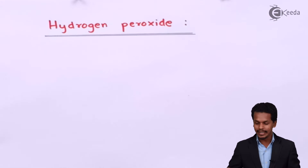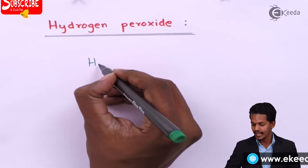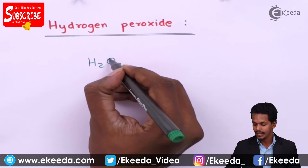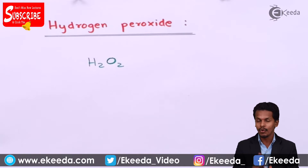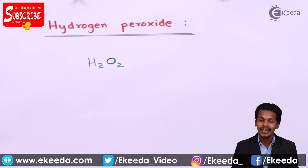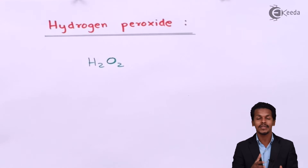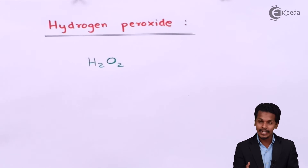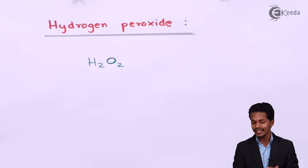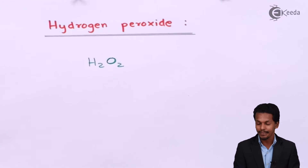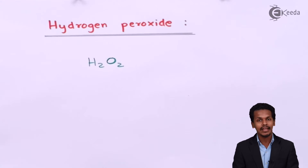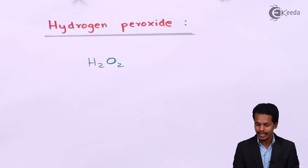Talking about hydrogen peroxide, the chemical formula is H2O2. This is a molecule which consists of one extra oxygen compared to H2O, and that is the reason hydrogen peroxide is also known as oxygenated water. Water is H2O, but if we oxygenate it, it becomes H2O2. It will have a different structure compared to water, which we will discuss in the next topic.